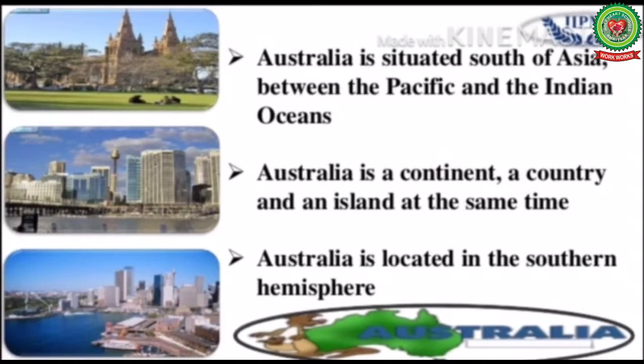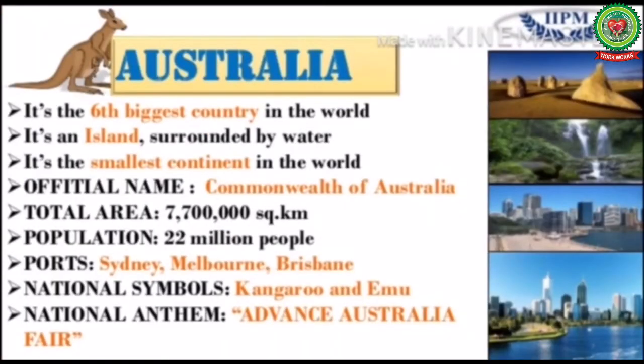Australia is surrounded by water from all sides and is located in the southern hemisphere. Let's now discuss some interesting facts about Australia.